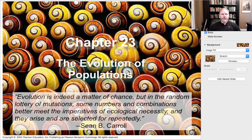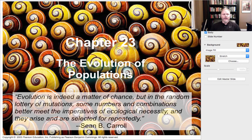Chapter 23 deals with the evolution of populations. I like this quote from Sean Carroll: 'Evolution is indeed a matter of chance, but in the random lottery of mutations, some members and combinations better meet the imperatives of ecological necessity, and they arise and are selected for repeatedly.' We talked about how mutations basically happen at random.